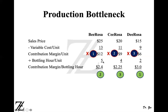$3 per bottleneck hour is more than B Rosa's $2.40, which was originally number one in terms of contribution margin per unit. So if we rank which product to produce first based on contribution margin per bottleneck hour, D Rosa should be produced and sold first, followed by B Rosa, and then C Rosa third. That way the company can maximize profits.